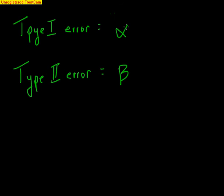These two values always work in opposites. If we try to lower alpha to reduce Type I error, beta increases. And if we try to lower beta to reduce Type II error, then alpha increases. So they work in opposites of each other.